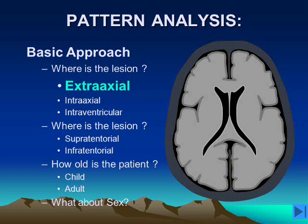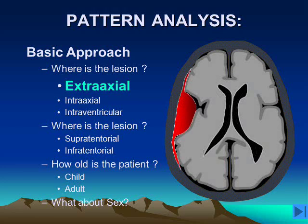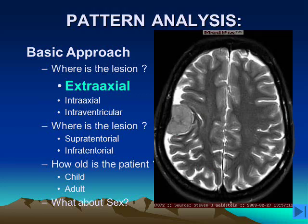Extra-axial lesions are located outside of the brain but still within the nervous system. They are lesions that are external to the pia, which is the gray matter, and we can recognize that the gray matter is being displaced and pushed away from the inner table of the skull. This creates the slight enlargement of the subarachnoid space that we can see on either side of the mass, as indicated by the stars on this image.